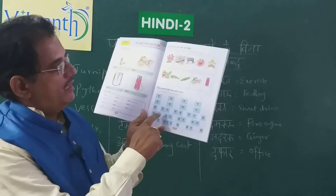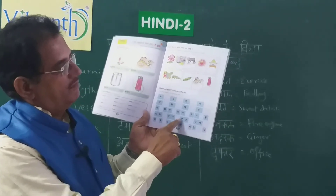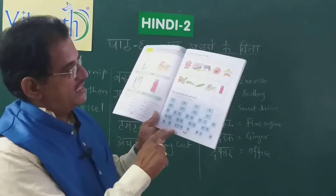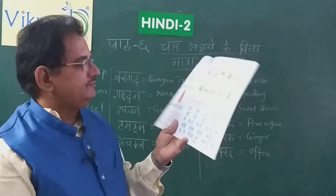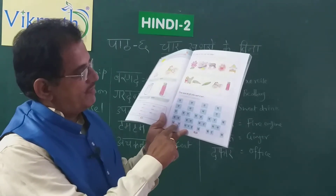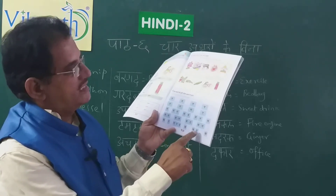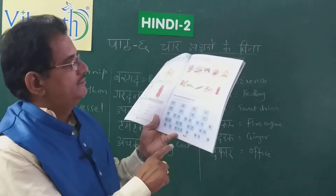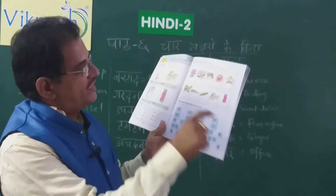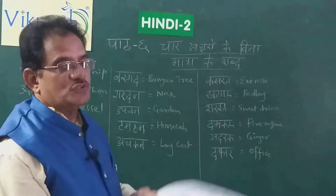Ka, Ma, La — Kamal. Ba, Ta — Kha — Batak. Ma, Ta, Ra — Matar. Ma, Ga, Ra — Magar. Like that — Kamar, Gardhan, Adrak, Tam-tam. If you fill in the boxes there, then you will get some words, and those words you have to learn.